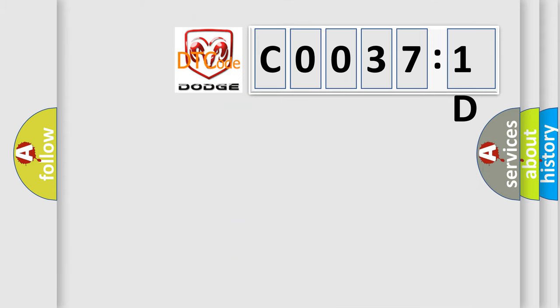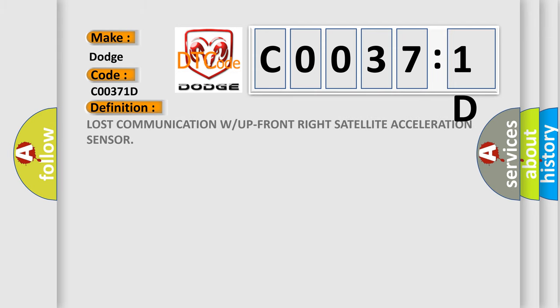So, what does the diagnostic trouble code C0037:1D interpret specifically for Dodge car manufacturers? The basic definition is Lost Communication with Front Right Satellite Acceleration Sensor.